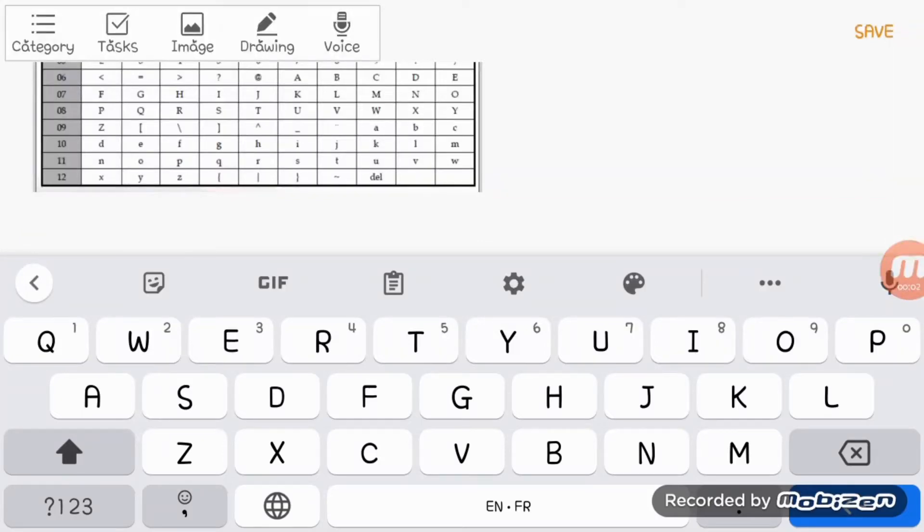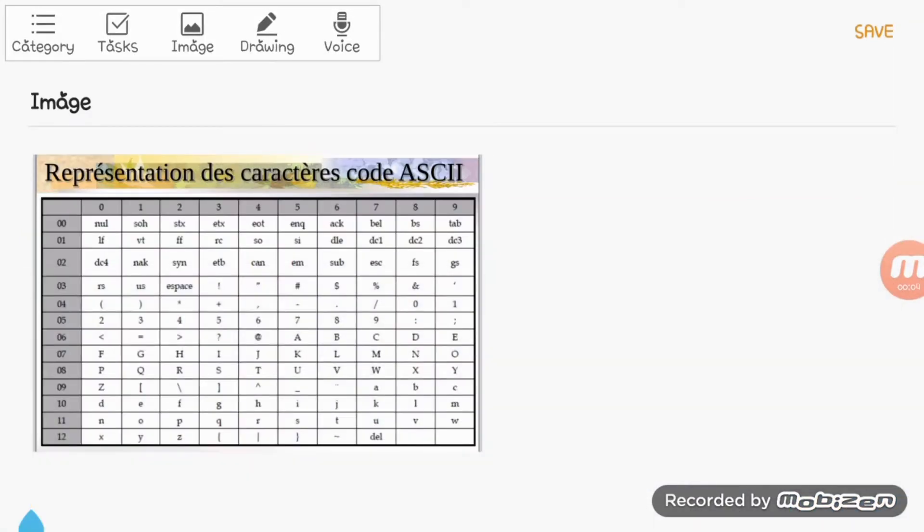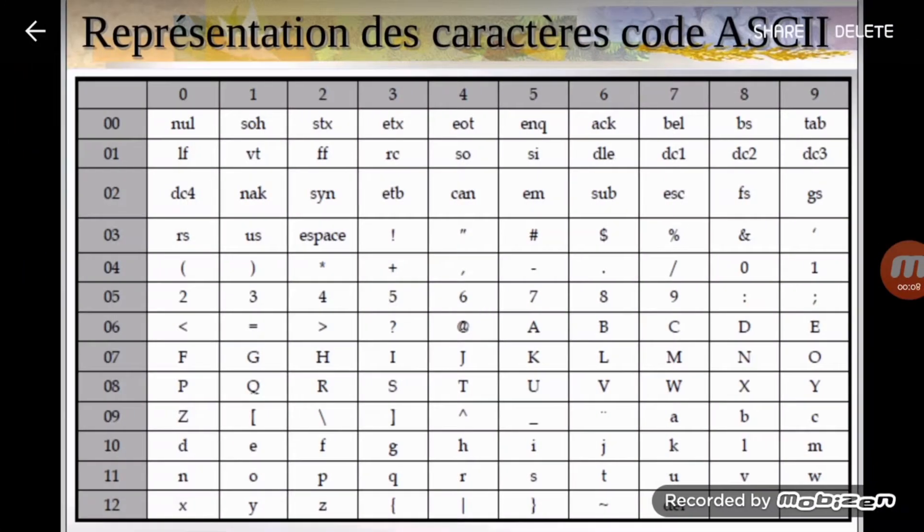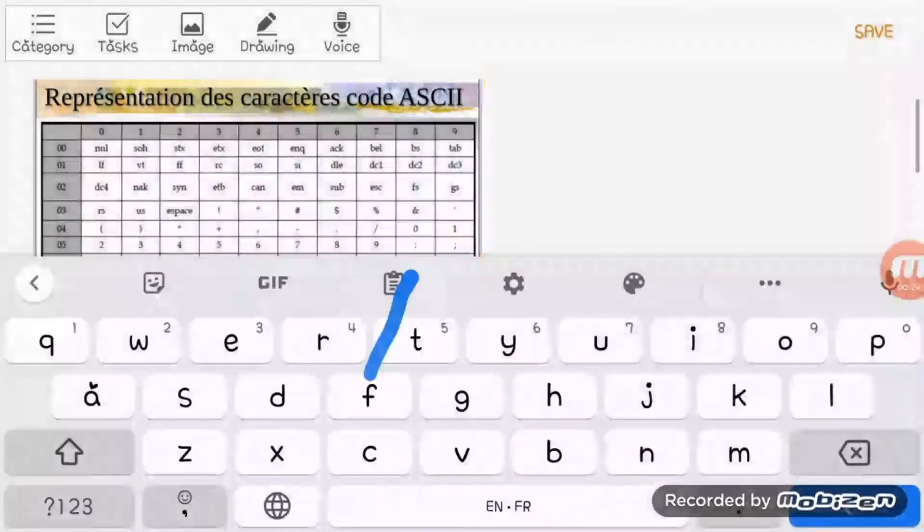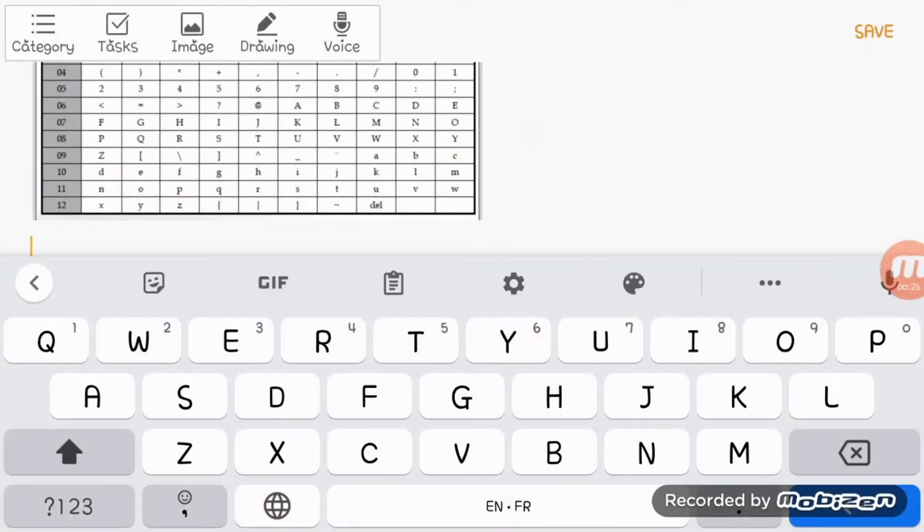Hello guys, in this video I will show you how you can write your name in binary. You need first of all this table, it's called ASCII code, and here you can find all the numbers and the letters. I will write my name.